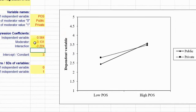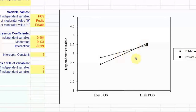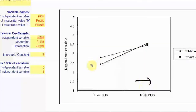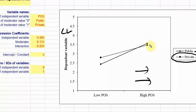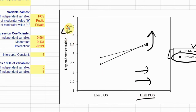We have already discussed what this negative sign means. Which slope is steeper? In this case, public sector is much steeper — if you increase POS in public sector banks, this leads to a higher change in collaborative culture. In contrast, in private sector banks, increasing perceived organizational support does not lead to a similar change in collaborative culture as it does in public sector banks.